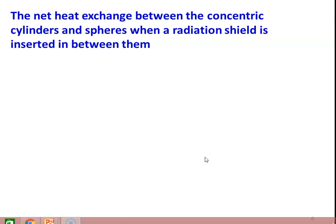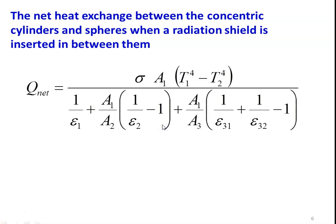The net heat exchange between concentric cylinders or spheres when a radiation shield is inserted is: Q_net = sigma * A1 * (T1^4 - T2^4) / [1/epsilon1 + (A1/A2) * (1/epsilon2 - 1) + (A1/A3) * (1/epsilon31 + 1/epsilon32 - 1)], where A1 is the area of the first cylinder, A2 is the area of the shield, and A3 is the area of the outer cylinder.